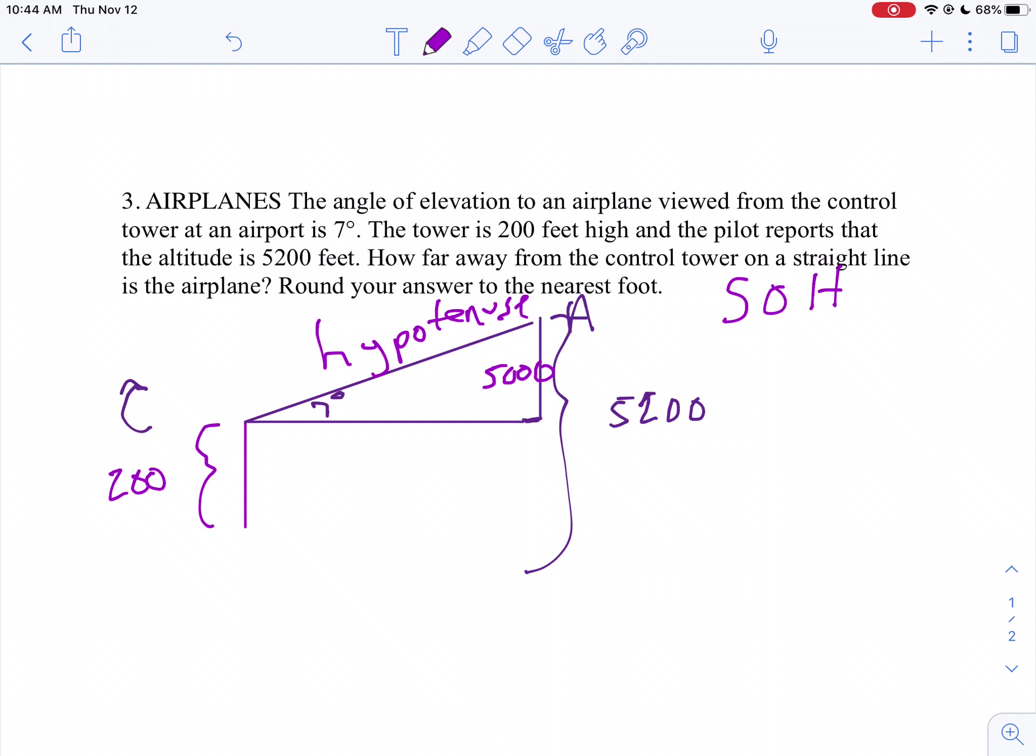One of my favorite things to remember. So we're going to use sine because sine of 7 degrees is the opposite, which is 5,000, over the hypotenuse, which I'll call h.